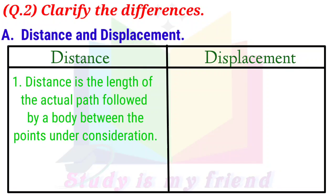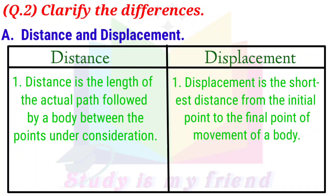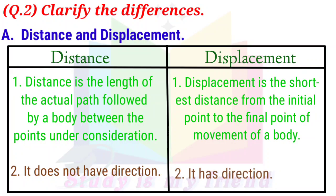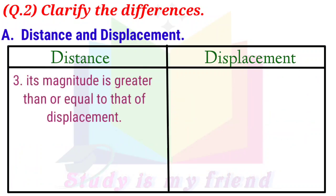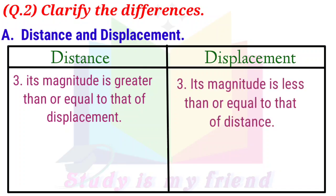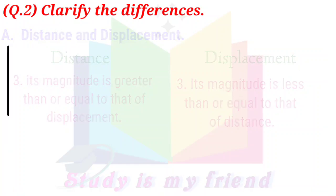Distance and Displacement. Distance is the actual path length covered by a body between initial and final point of movement. It does not have direction. Displacement has direction. Its magnitude is greater than or equal to that of displacement. Displacement magnitude is less than or equal to that of distance.